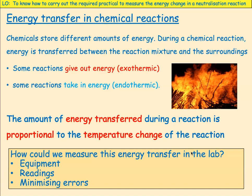Energy transfer in chemical reactions — we've done this in a previous topic. Chemicals store different amounts of energy. During a chemical reaction, energy is transferred between the reaction mixture and the surroundings. Some reactions give out energy — they're exothermic — and some take in energy — they're endothermic. The amount of energy transferred during a reaction is proportional to the temperature change of the reaction.